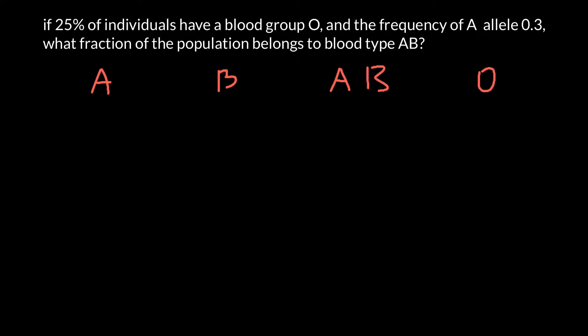As you see, here we have only three alleles: allele A, B, and O — just three alleles, A, B, and O, which make these four blood groups.